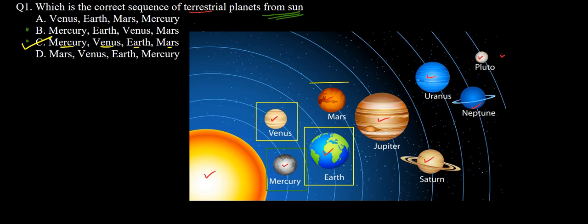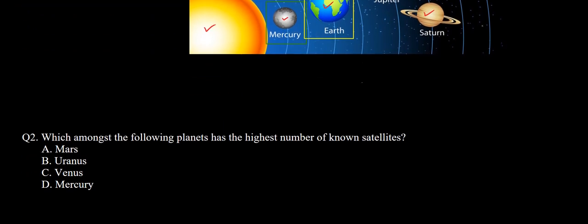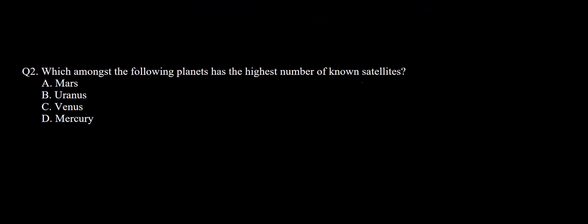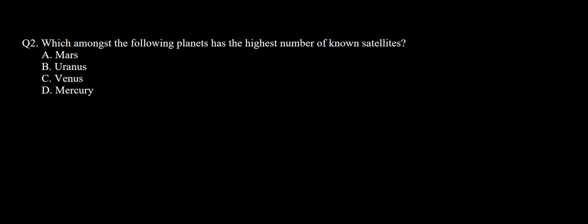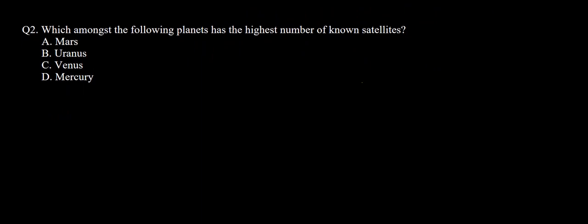So let's move on to question number 2, which is again based on planets. Which amongst the following planets has the highest number of known satellites? We need to find which one out of these four options has the maximum number of satellites. So first let us note down the number of satellites of each planet.